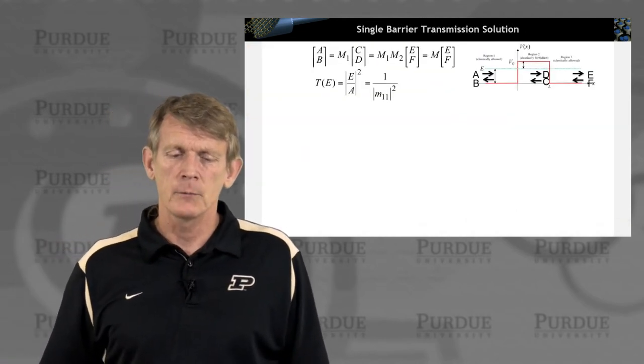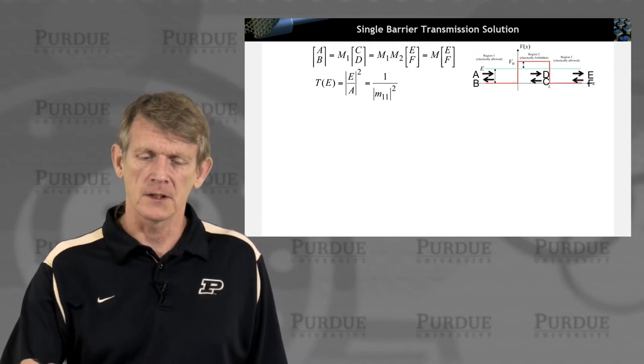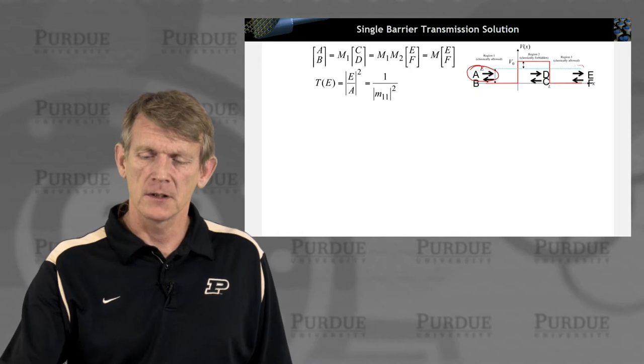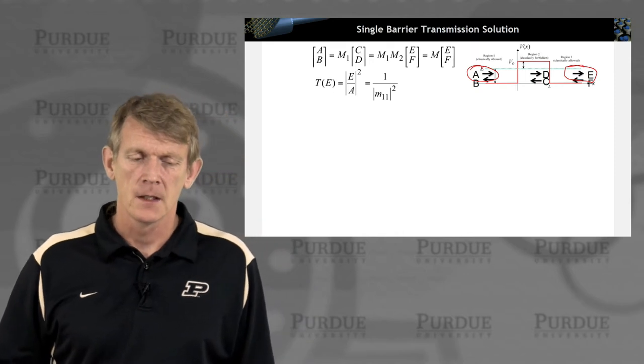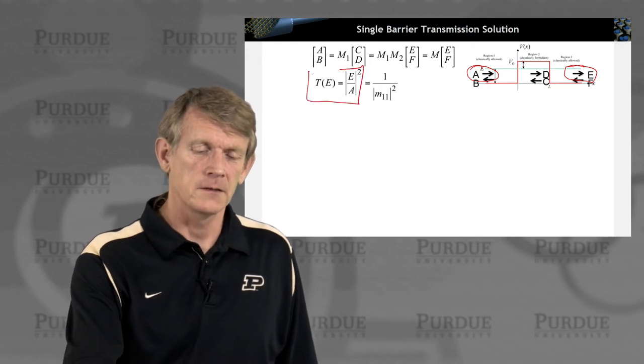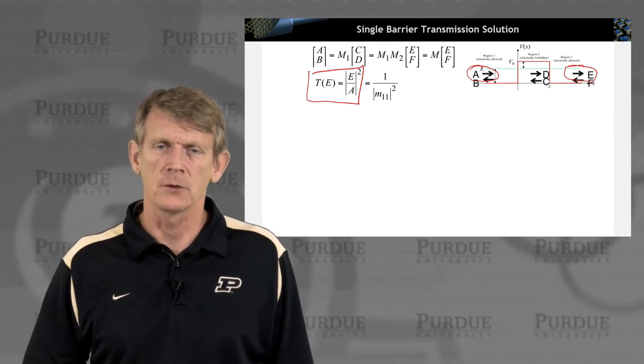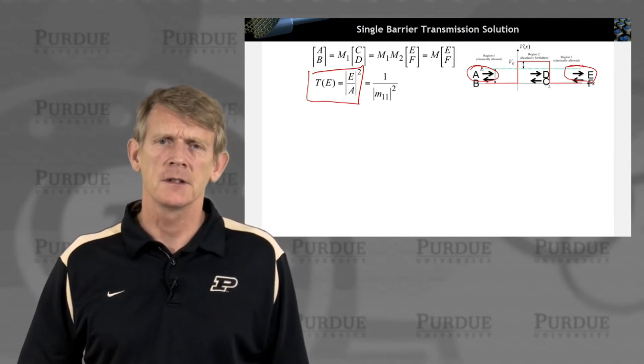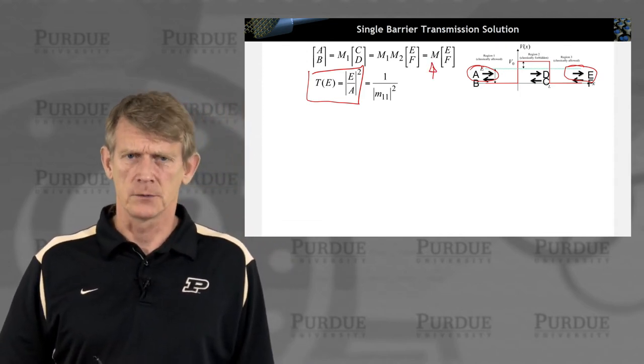If I'm interested in a transmission coefficient through the structure, what I'd like to know is I inject a wave here at A with amplitude 1, and I'm interested in what comes out at the end of the structure with amplitude E. The transmission is defined as the square magnitude of E over A magnitude squared, because in principle this could be a complex coefficient. That corresponds to a specific matrix element in this transfer matrix M, the 1 over M11 magnitude squared.